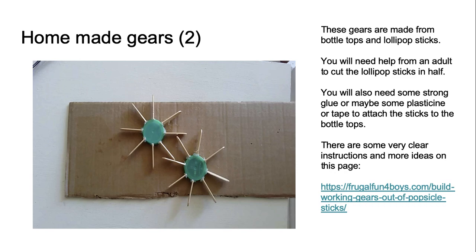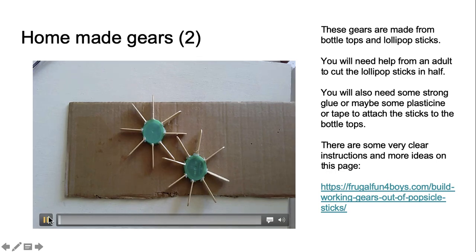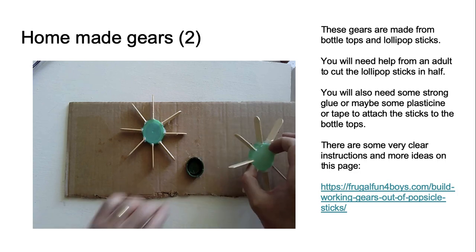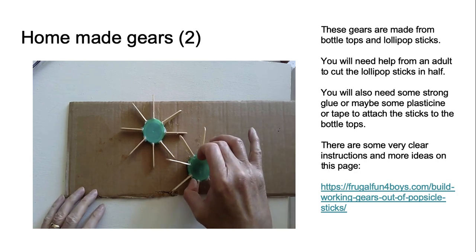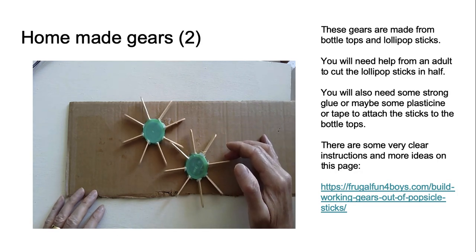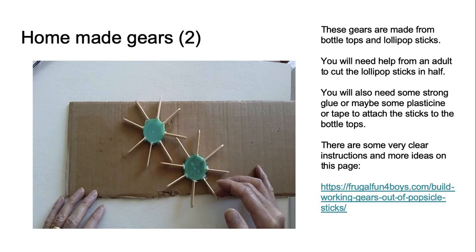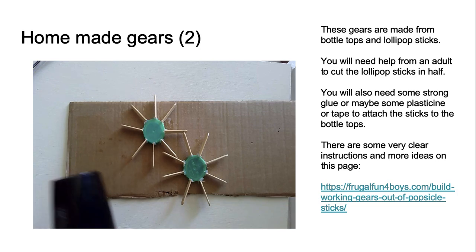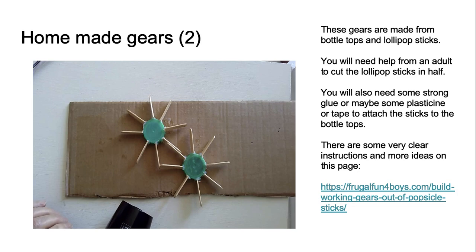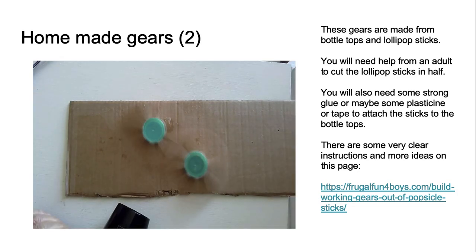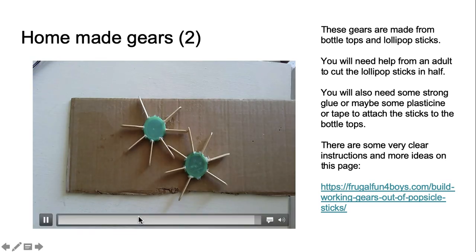Homemade gears number two. These gears are made from bottle tops and lollipop sticks. You will need help from an adult to cut the lollipop sticks in half, and some strong glue, plasticine, or tape to attach the sticks to the bottle tops. I've stuck a smaller bottle top from a squash bottle to a piece of card, then put the milk bottle top over it so it turns very freely, and when I turn one gear it makes the other gear turn. I discovered you can even turn them with a hair dryer — turn it up and they spin really fast!